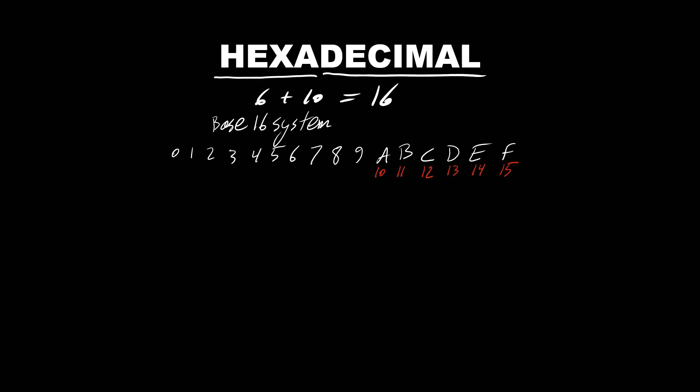Let's create these places for hexadecimal. Place value position 0, base 16 to the power of 0 is 1. Any number to the power of 0 is 1. Then one place to the left, place value position 1, 16 to the power of 1 is 16.